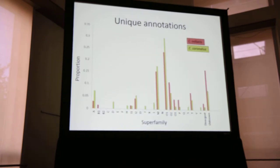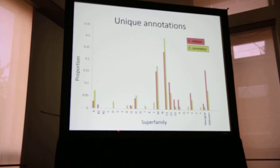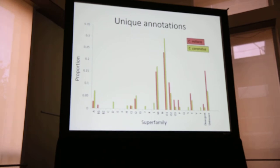This chart shows the annotations that were unique to each species. You can see that this is basically a recapitulation of the overall distribution of annotations — we don't see any strikingly different patterns of superfamily membership. This tells us that the patterns of gene superfamily variation likely do not begin to differ dramatically at this phylogenetic scale.